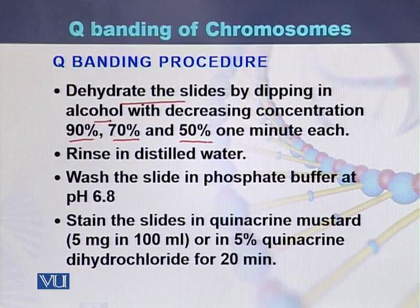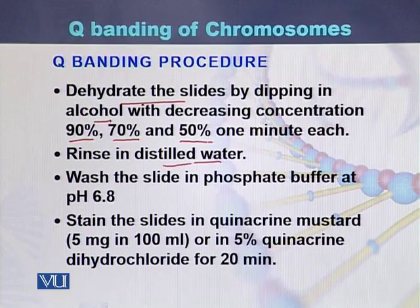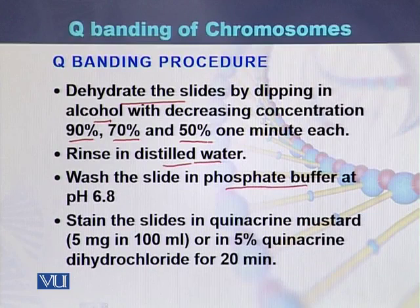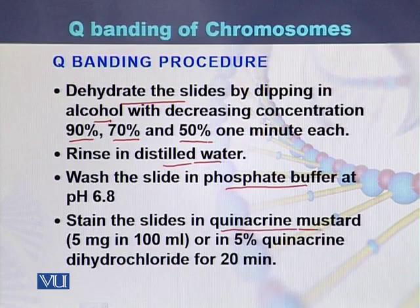Once the slides have been dehydrated with alcohol, we rinse the slides with distilled water, then wash the slides with phosphate buffer, and then stain the slides in quinacrine mustard.